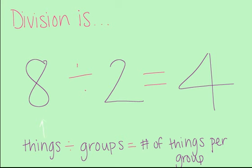But we can categorize the parts differently. The eight is the number of things. The two is the number of groups. And the answer, four, is the number of things in each group.